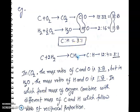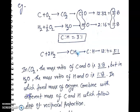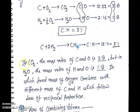So this follows the law of reciprocal proportion. In carbon dioxide, the mass ratio of carbon and oxygen is 3:8, and in water (H₂O), the mass ratio of hydrogen and oxygen is 1:8. In both cases, a fixed mass of oxygen combines with different masses of carbon and hydrogen, which follows the law of reciprocal proportion.